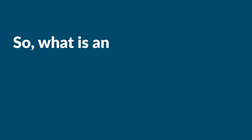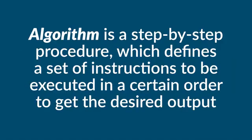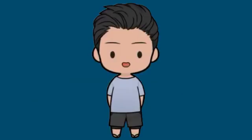So what is an algorithm? An algorithm is a step-by-step procedure which defines a set of instructions to be executed in a certain order to get a desired output. Algorithms are generally created independent of underlying languages and can be implemented in more than one programming language.